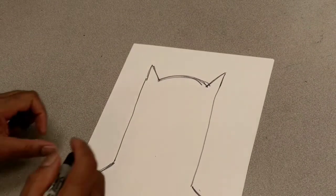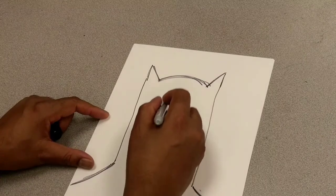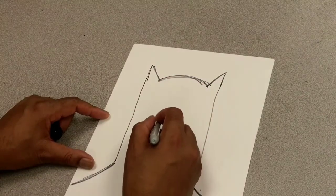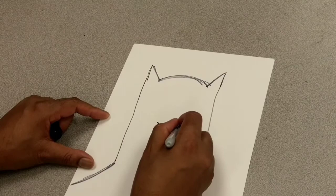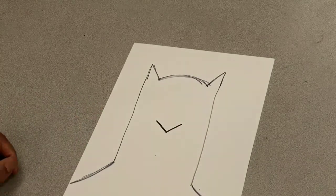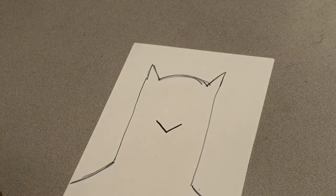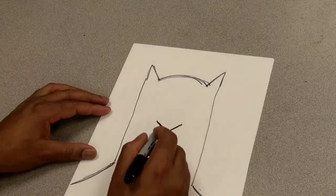Now, what we're going to do next, guys, we're going to go here like this. We're going to come down about this way and make a point for Batman's nose. Another word for a mask is called a cowl. Batman wears a cowl.